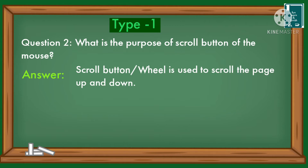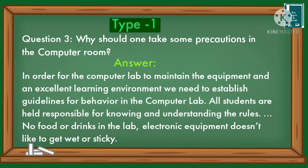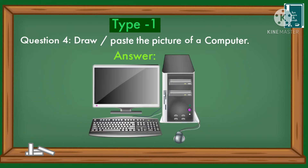The scroll button or wheel is used to scroll the page up and down. Question: Why should one take some precautions in the computer room? Answer: In order for the computer lab to maintain the equipment and an excellent learning environment, we need to establish guidelines for behavior. All students are held responsible for knowing and understanding the rules. No food or drink in the lab — electronic equipment does not like to get wet or sticky.